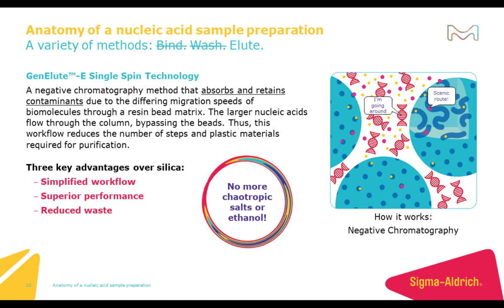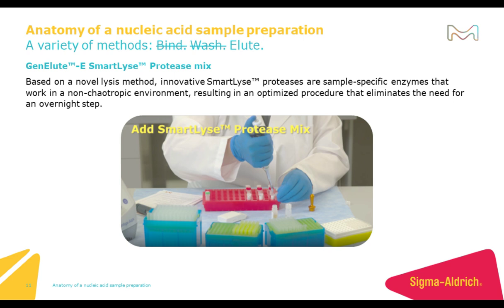Larger biomolecules like nucleic acids flow more readily through a resin bed, while smaller contaminants are absorbed and retained by differing migration speeds through the resin beads and take longer to make it through. As you can see in this graphic, the nucleic acids bypass the beads while the sample contaminants are small enough to fit within the beads and are absorbed, taking a scenic route. Clearing the sample and packing the resin before loading the supernatant prevents cellular debris from eluting in the final sample. These workflow changes provide three key advantages over silica: simplified workflow, superior performance, and reduced waste — by eliminating tube handling steps and removing chaotropic salts and ethanol.